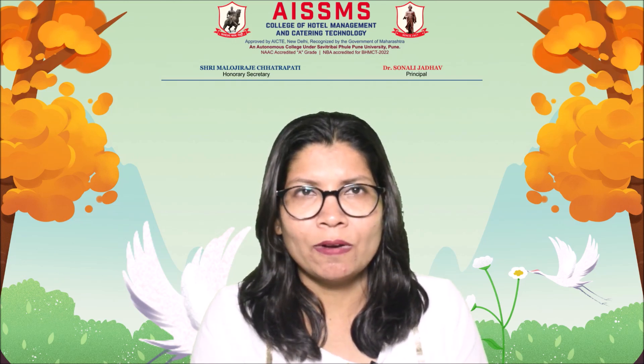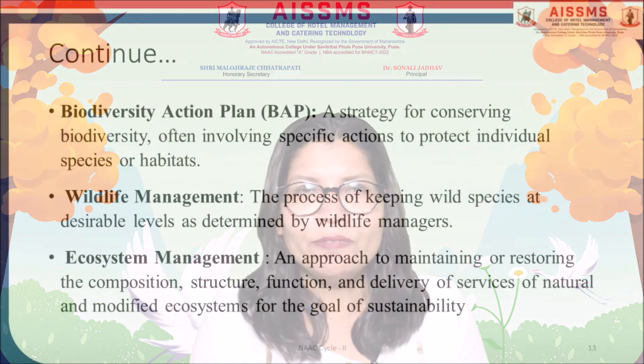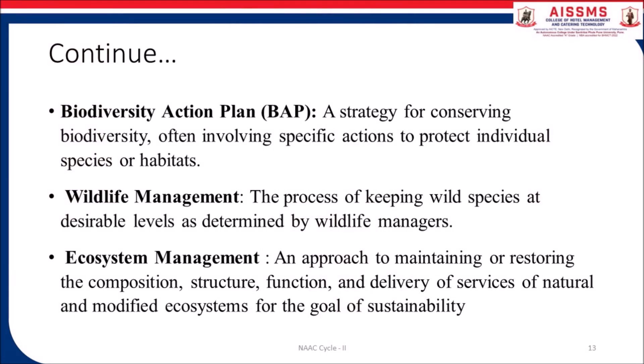IUCN Red List: a comprehensive inventory of the global conservation status of species, maintained by the International Union for Conservation of Nature. Biodiversity Action Plan: a strategy for conserving biodiversity, often involving specific actions to protect individual species or habitats. Wildlife management: the process of keeping wild species at desirable levels as determined by wildlife managers. Ecosystem management: an approach to maintaining or restoring the composition, structure, function, and delivery of services of natural and modified ecosystems for the goal of sustainability.